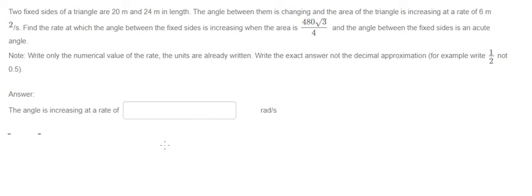Hello everybody. Today I will talk about calculus — the topic is about the rate of change. The problem: two fixed sides of a triangle are 20 meters and 24 meters in length. The angle between them is changing, and the area of the triangle is increasing at a rate of 6 meters squared per second. Find the rate at which the angle between the two fixed sides is increasing when the area is the given number and the angle between the fixed sides is acute.